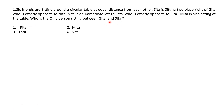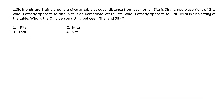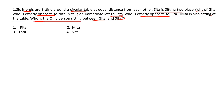Then who is the person sitting between Sita and Gita? When you are given such situation questions, you have to first read the question two to three times and underline the important parts. There are six friends at a circular table at equal distance. Sita is sitting two places right of Gita, who is exactly opposite to Nita. Nita is on the immediate left of Lata, who is exactly opposite to Rita. Meeta is also sitting at the table.